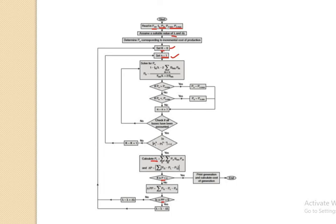Summarizing this module on economic load dispatch: we covered economic load dispatch neglecting transmission loss and considering transmission loss. Before that, we covered the unit commitment problem, different system constraints (equality, inequality, soft, hard), generator constraints, thermal power plant cost characteristics, incremental cost characteristics, and the derivation of the coordination equation with two solution methods: penalty factor method and the beta/transmission loss coefficient method.